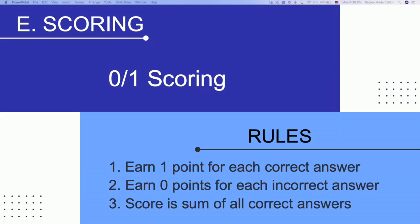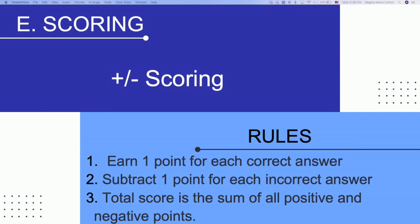However, things can never be so simple because some questions will have this wonderful rule attached to them. The next scoring rule is where it's going to matter. With the plus-minus scoring rule, you earn one point for each correct answer. However, one point is subtracted for each incorrect answer. So there are questions where you will be penalized if you don't get the option correct.